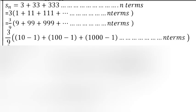Answer: Sn = 3 + 33 + 333 + ... n terms = 3(1 + 11 + 111 + ... n terms) = (3/9)(9 + 99 + 999 + ... n terms).